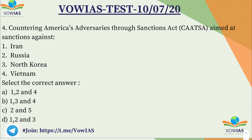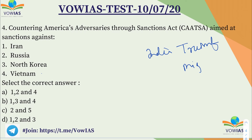Question number 4: The Countering America's Adversities Through Sanctions Act, that is CAATSA, is aimed against which countries? The context here is India's agreement for the S-400 Triumf missile system.